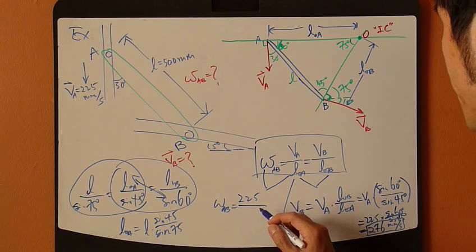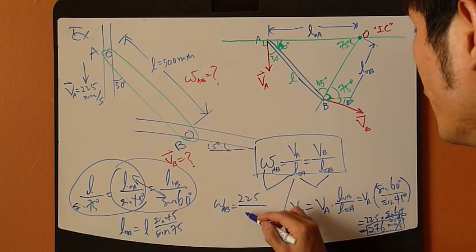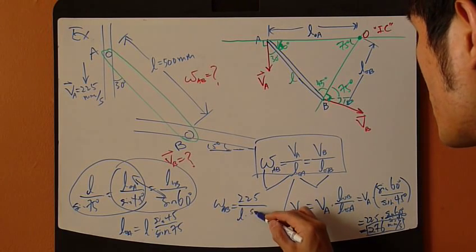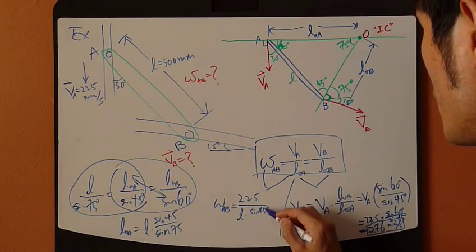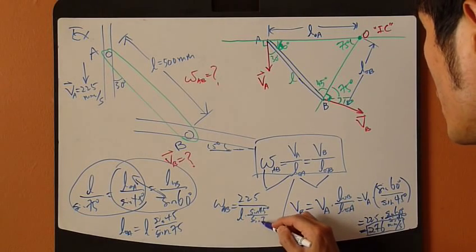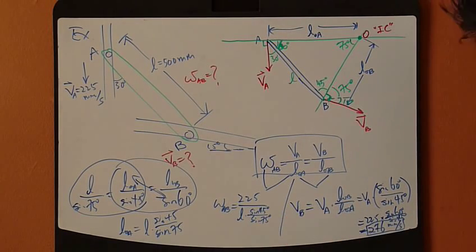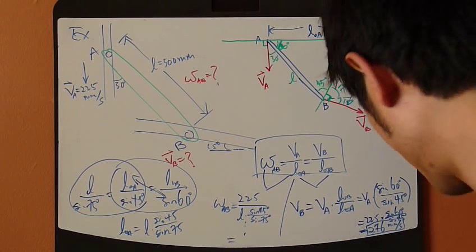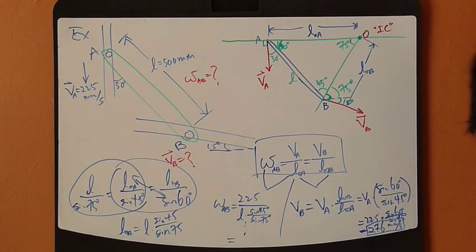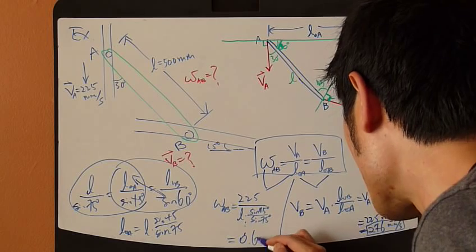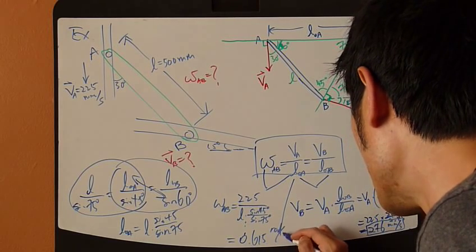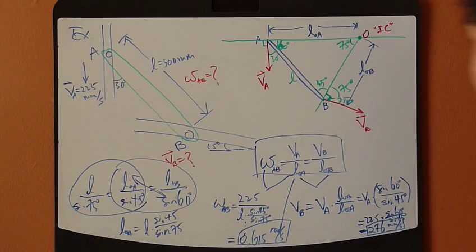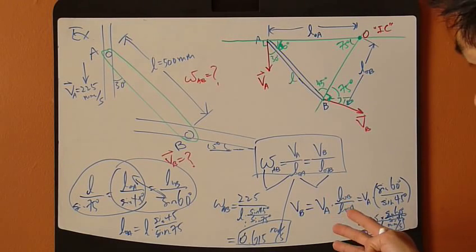So, L times sine 45 divided by sine 135. Plug in L, 500 down here, software crunch numbers, and we get Omega. So, 0.615 radian per second. That's it. Very fast.